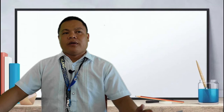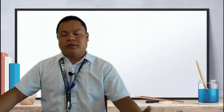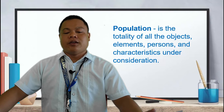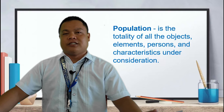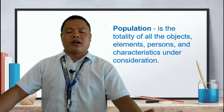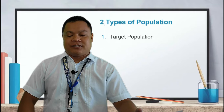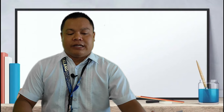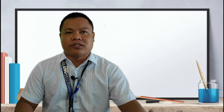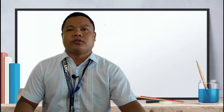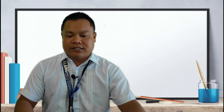Let me ask you first: when you hear the word 'population' and 'sample,' what comes to mind? Population is the totality of all the objects, elements, persons, and characteristics under consideration. It is understood that this population possesses common characteristics which the research aims to explore. There are two types: the target population and the accessible population. The target population is the actual population — for example, all senior high school students at Masalang National High School.